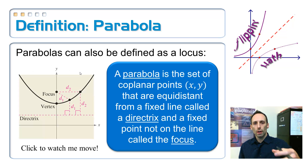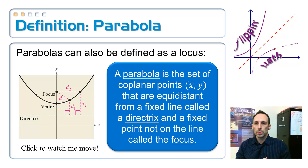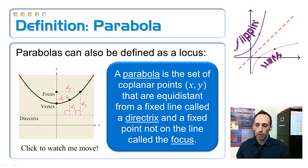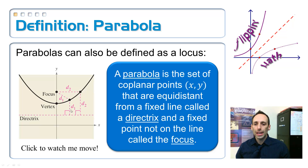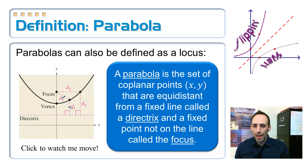Here is the locus definition of a parabola. A parabola is a set of coplanar points that are equidistant from two things: a fixed line called the directrix — see the red line in the picture — and a fixed point called the focus. It is the set of all points that are the same distance away from both. D1 and D1 are exactly the same. The distance from a point to a line is always measured perpendicularly, so D2 equals D1 for every point on the parabola.